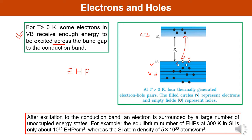Let us take the case of silicon. At 300 Kelvin, the equilibrium number of electron-hole pairs generated is approximately 10 raised to the power 10 per centimeter cube, whereas the silicon atom density is 5 times 10 raised to the power 22 atoms per centimeter cube. So few electrons in the conduction band are free to move via many available empty states, and the corresponding problem of charge transport in the valence band becomes more complicated.